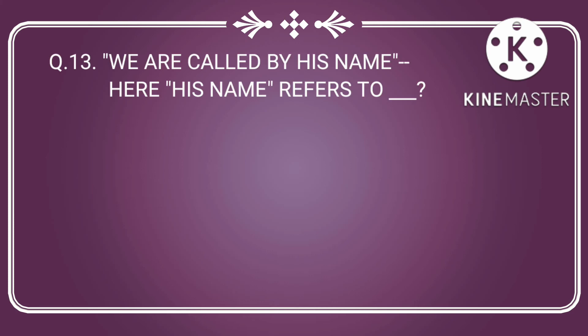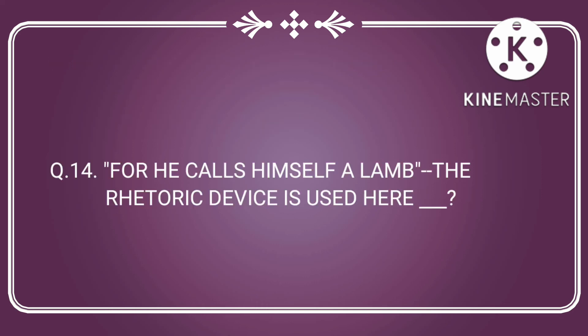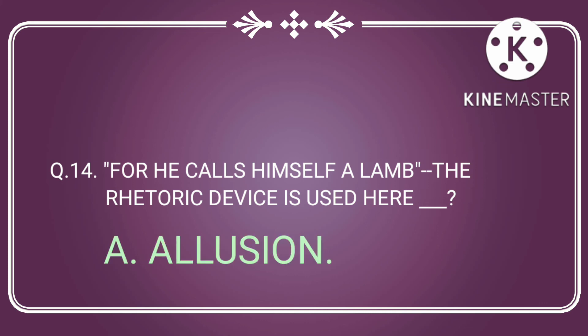Question number 13: 'We are called by his name.' Here, 'his name' refers to what? The answer is God's name. Question number 14: 'For he calls himself a lamb.' What rhetorical device is used here? The answer is Allusion.